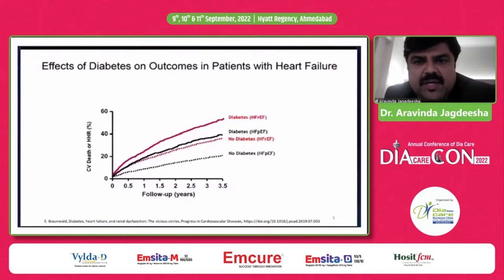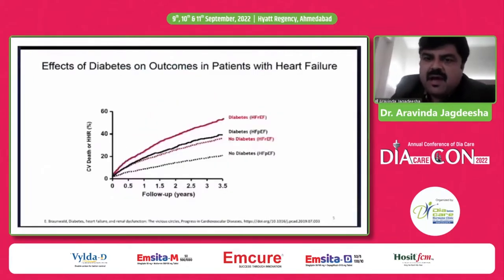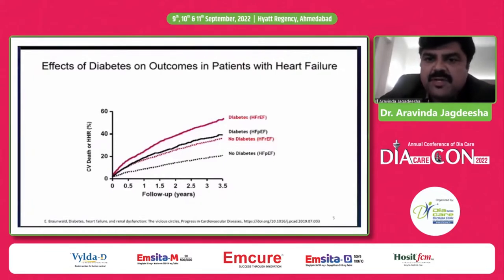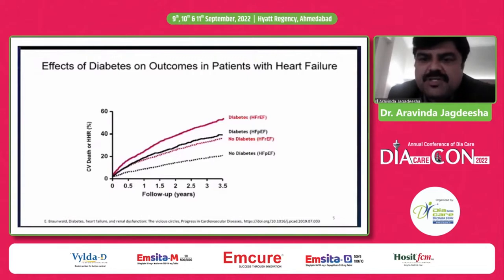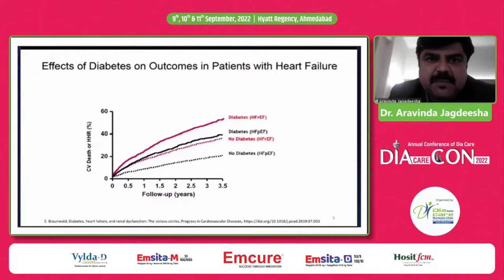Looking at the effects of diabetes on outcomes in patients with heart failure: patients with diabetes have higher CV death and hospitalization for heart failure. Patients with diabetes have a higher risk of heart failure with reduced ejection fraction compared to heart failure with preserved ejection fraction. In persons without diabetes, the incidences of both reduced and preserved ejection fraction come down, so persons with diabetes are more prone to heart failure.